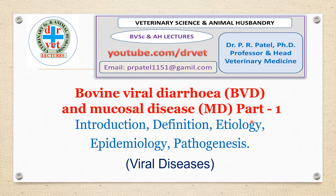In Part 1 we will study introduction, definition, etiology, epidemiology and pathogenesis. It is a viral disease of cattle. This disease is observed in India and slowly spreading. So this is an important disease for a veterinarian.